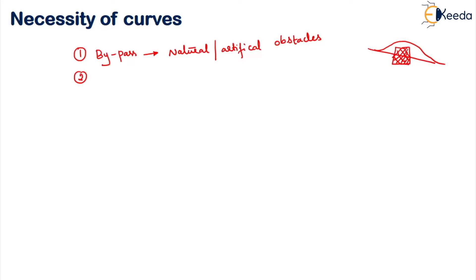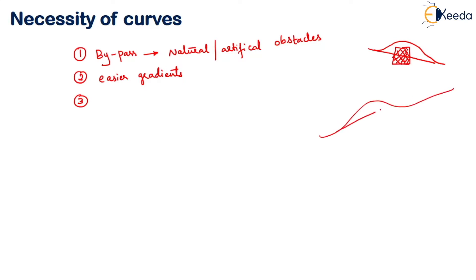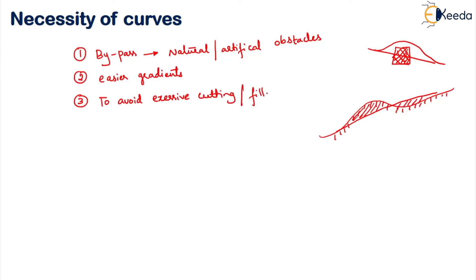The second necessity is to provide easier gradients by diversions from the straight track. If we provide a straight track, sometimes the gradients become very difficult — very steep or unworkable gradients. So in order to have easier gradients, we go for curves. The third necessity is to avoid excessive cutting or filling. Where a lot of cutting or filling would be required on the straight route, those regions can be avoided by changing the direction of the track using curves.